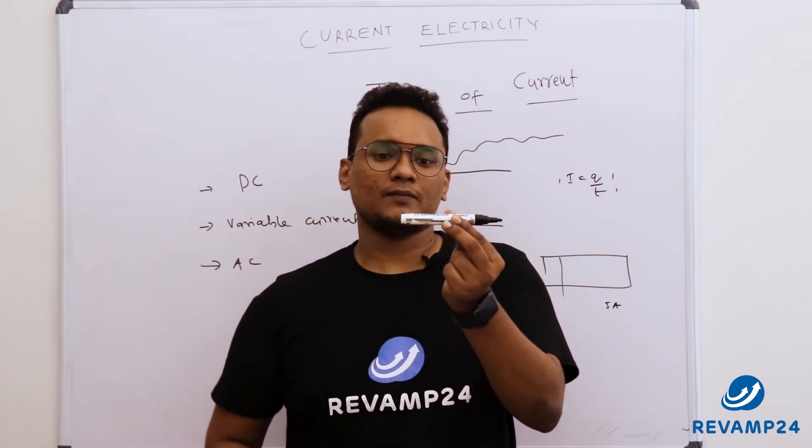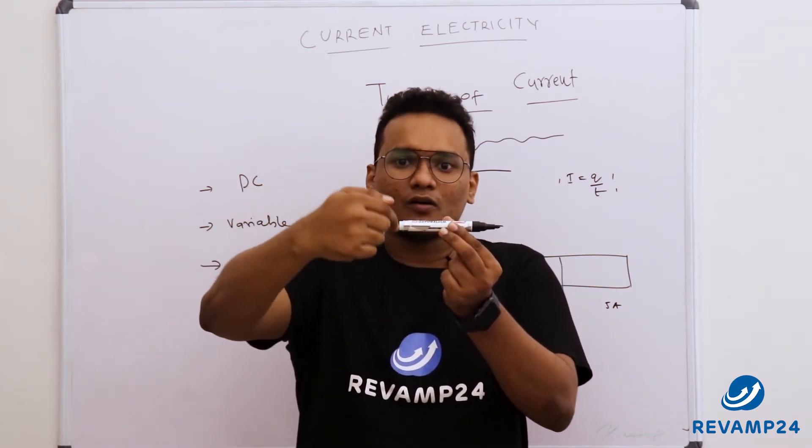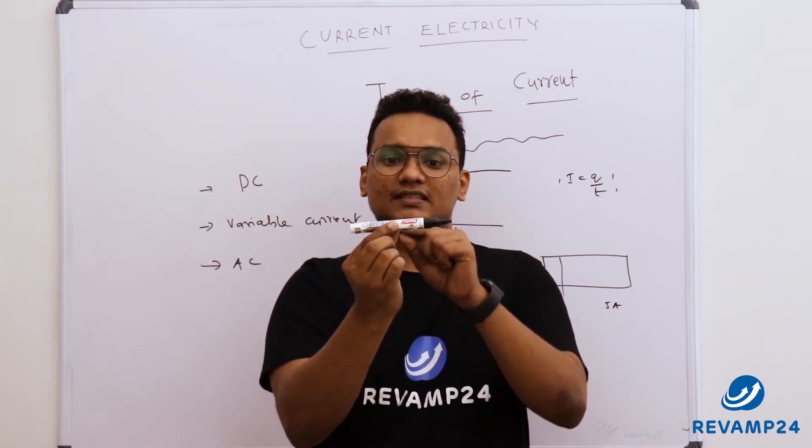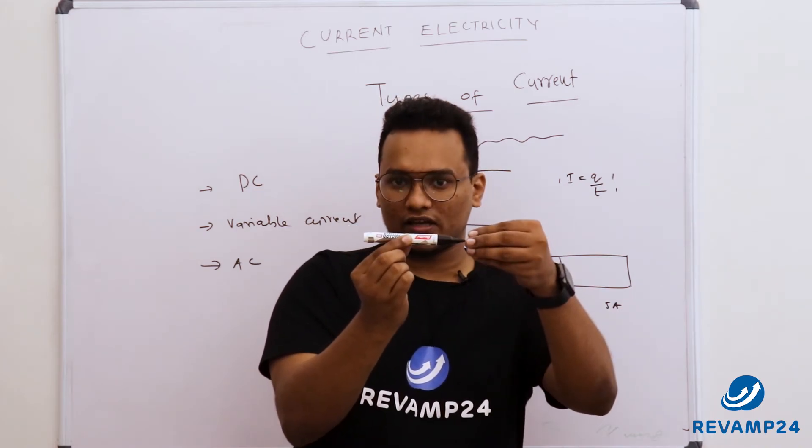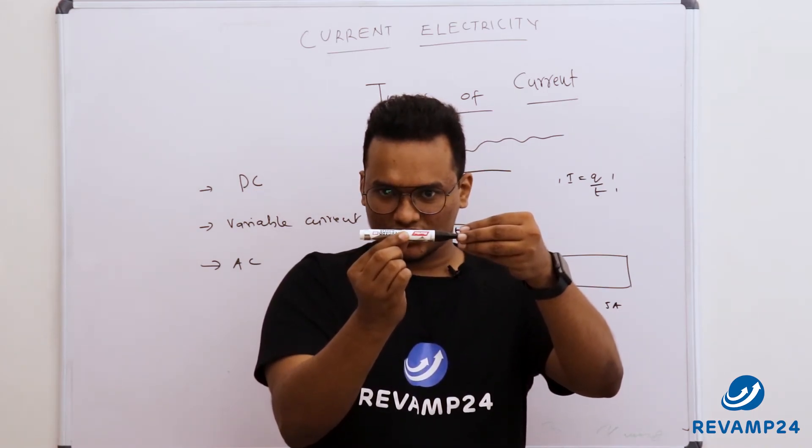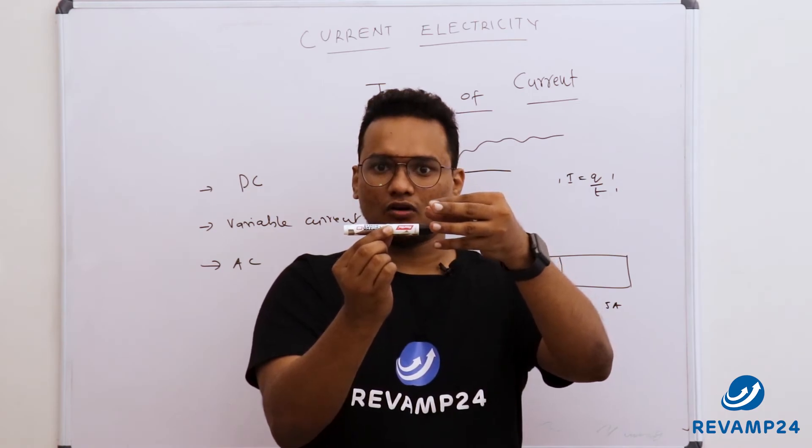Now after that, what will happen? Current will reverse its direction, which means current will start flowing in this direction. That is from zero, will go to maximum value, then it will go to minimum.